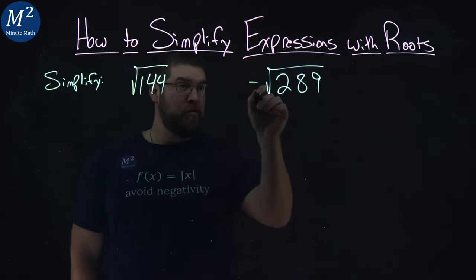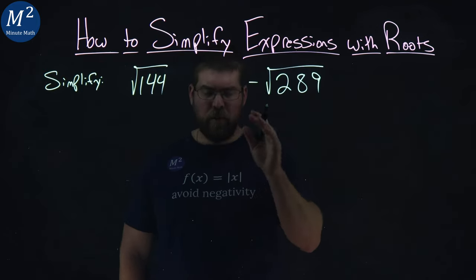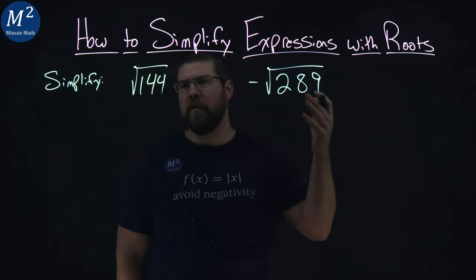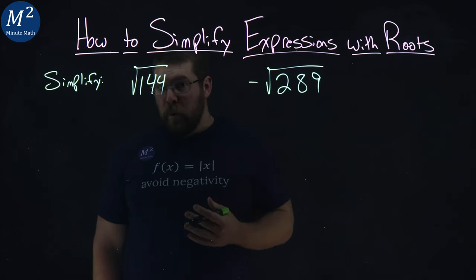Now notice, when we see the square root symbol, that's the square root or 2nd root. Later on, we'll talk about 3rd root, 4th root, 5th root, etc. The square root is the opposite of what's squared.